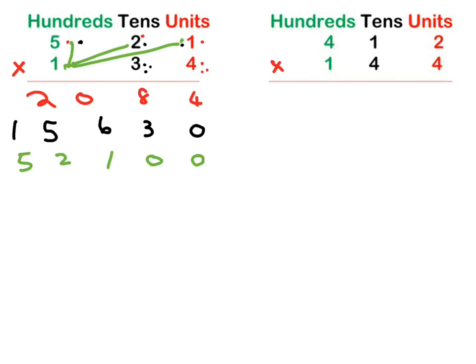We finished with our hundreds column now. Now we're simply going to add everything up like we always do. Okay, 4 plus 0 plus 0 is 4. 8 plus 3 is 11, carry a 1. 1 plus 6 is 7, plus 1 is 8. 2 plus 5 is 7, plus 2 is 9. And 1 plus 5 is 6. There's your answer.